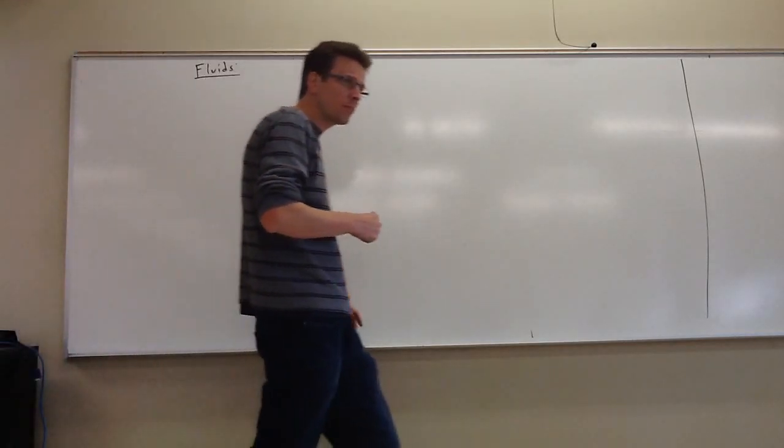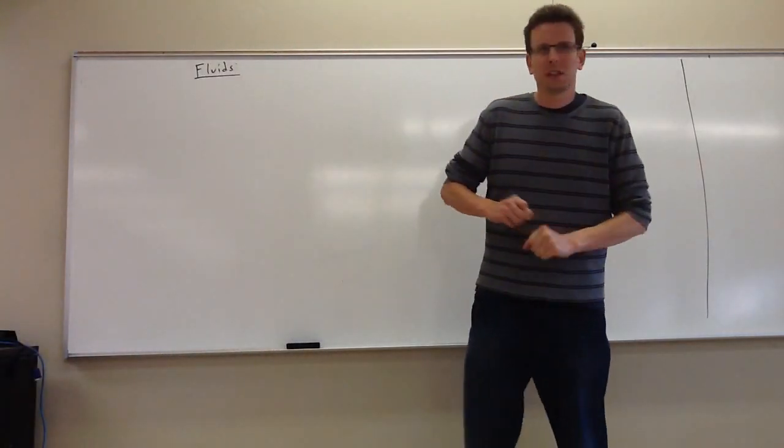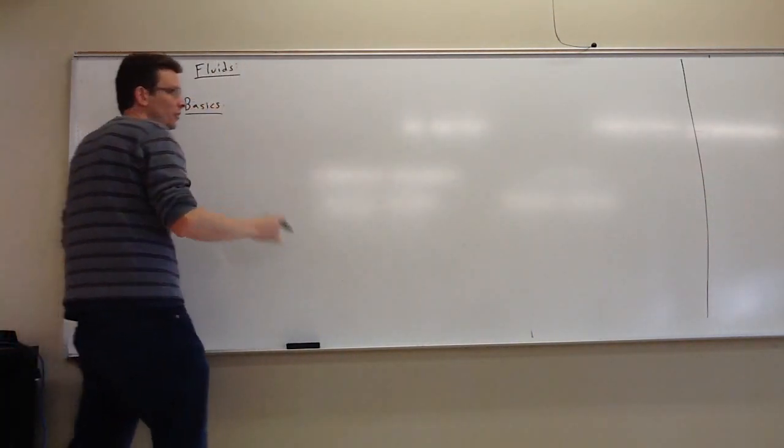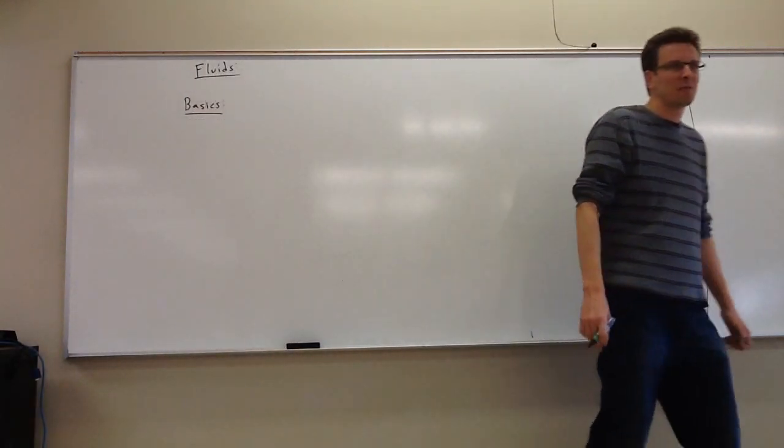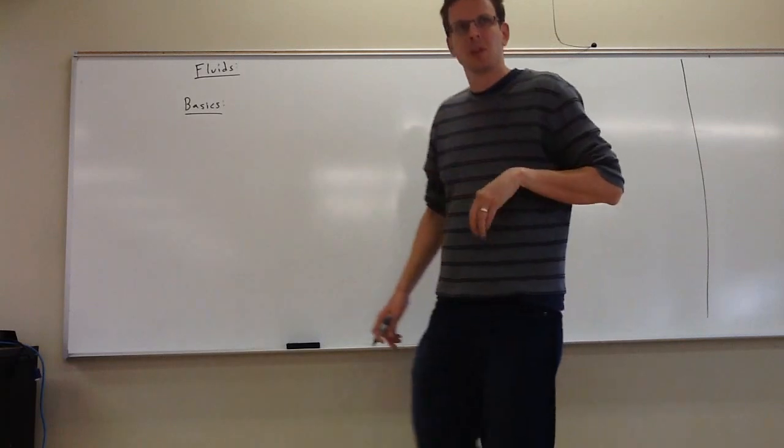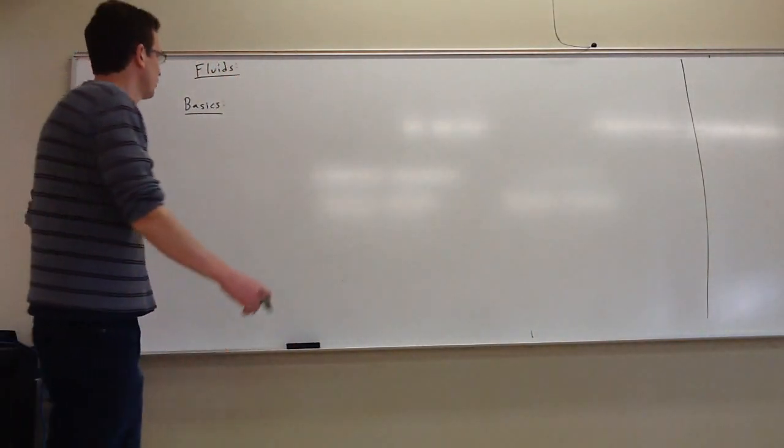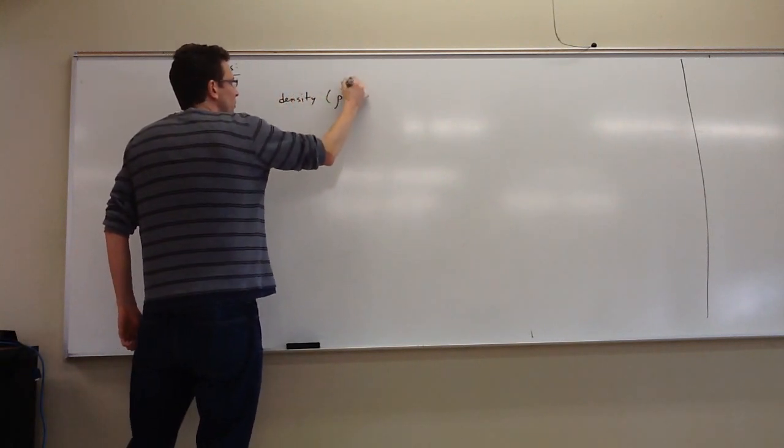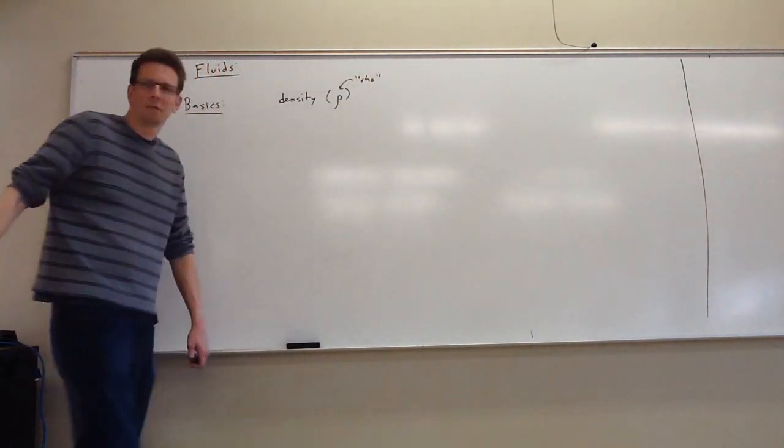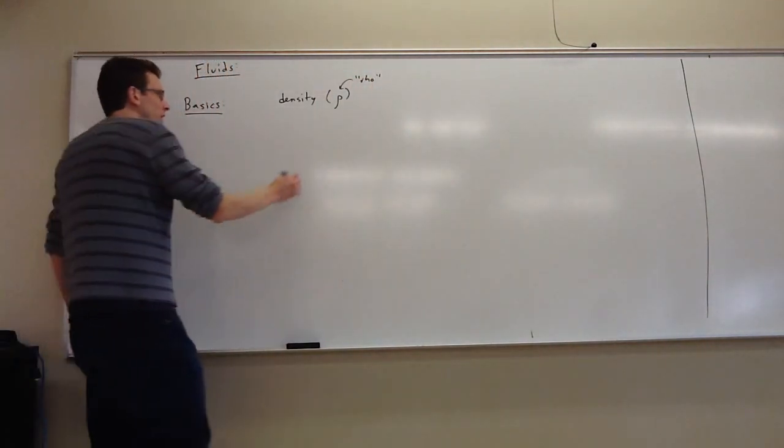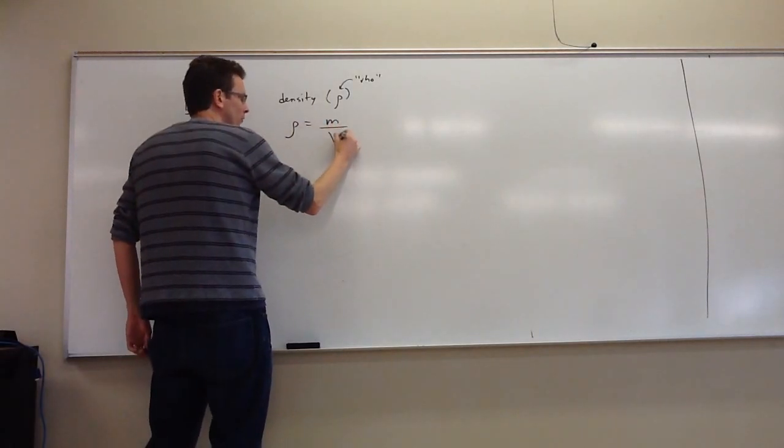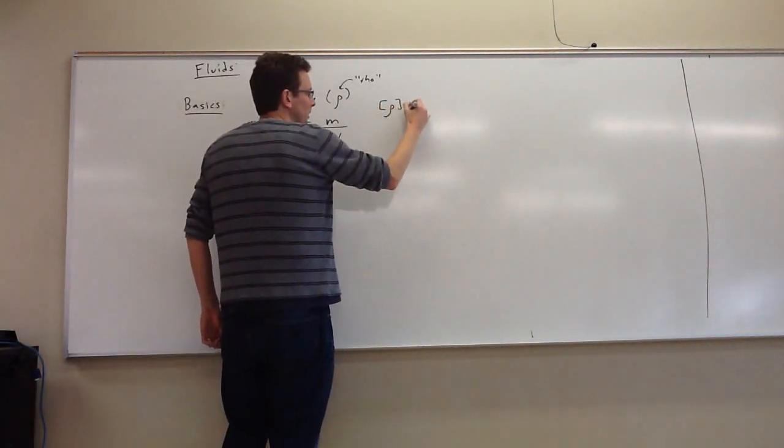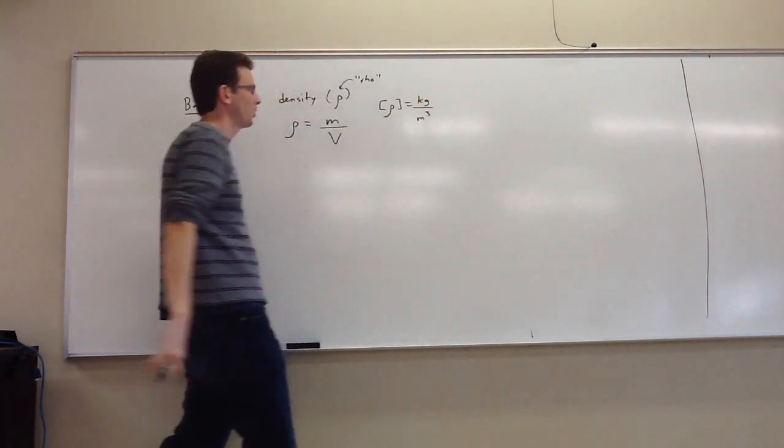So for fluids, I want to start off with some basics. You may or may not have seen these in other classes, sometimes in chemistry or general science. First, let me mention density. Density, we use the Greek letter rho, looks like a rounded off P. Density is defined as the object's mass over its volume. The units for us would be kilograms per cubic meter.